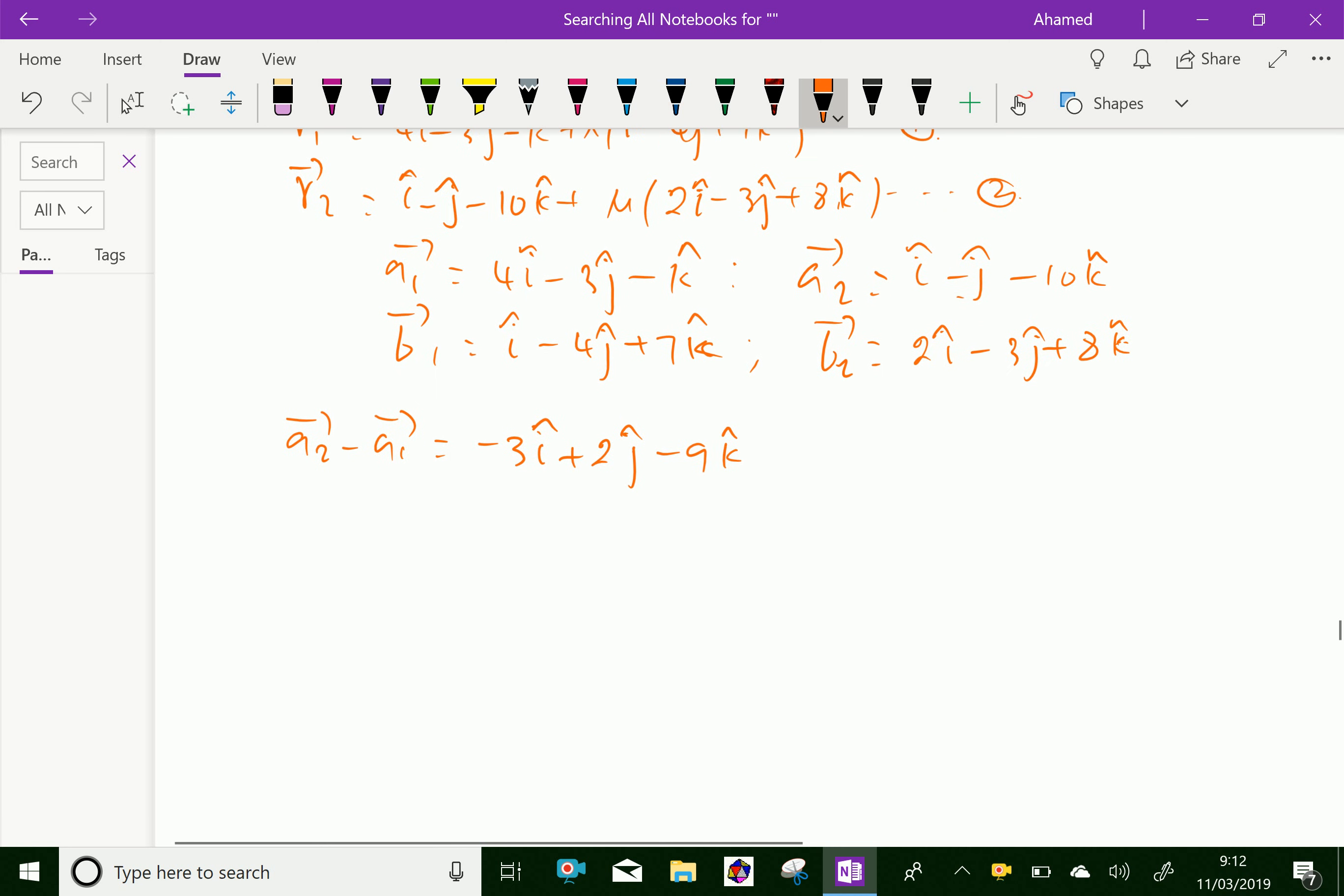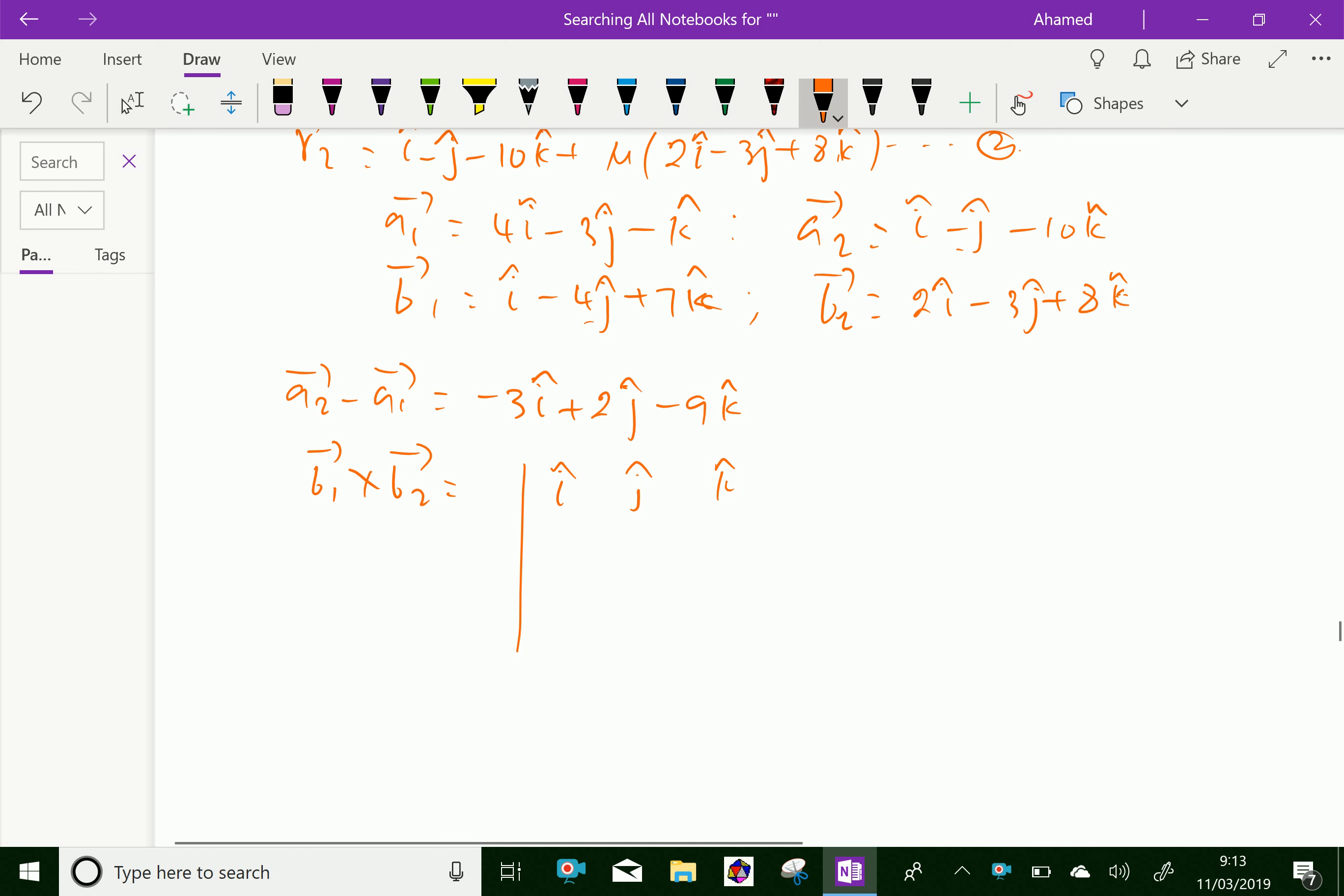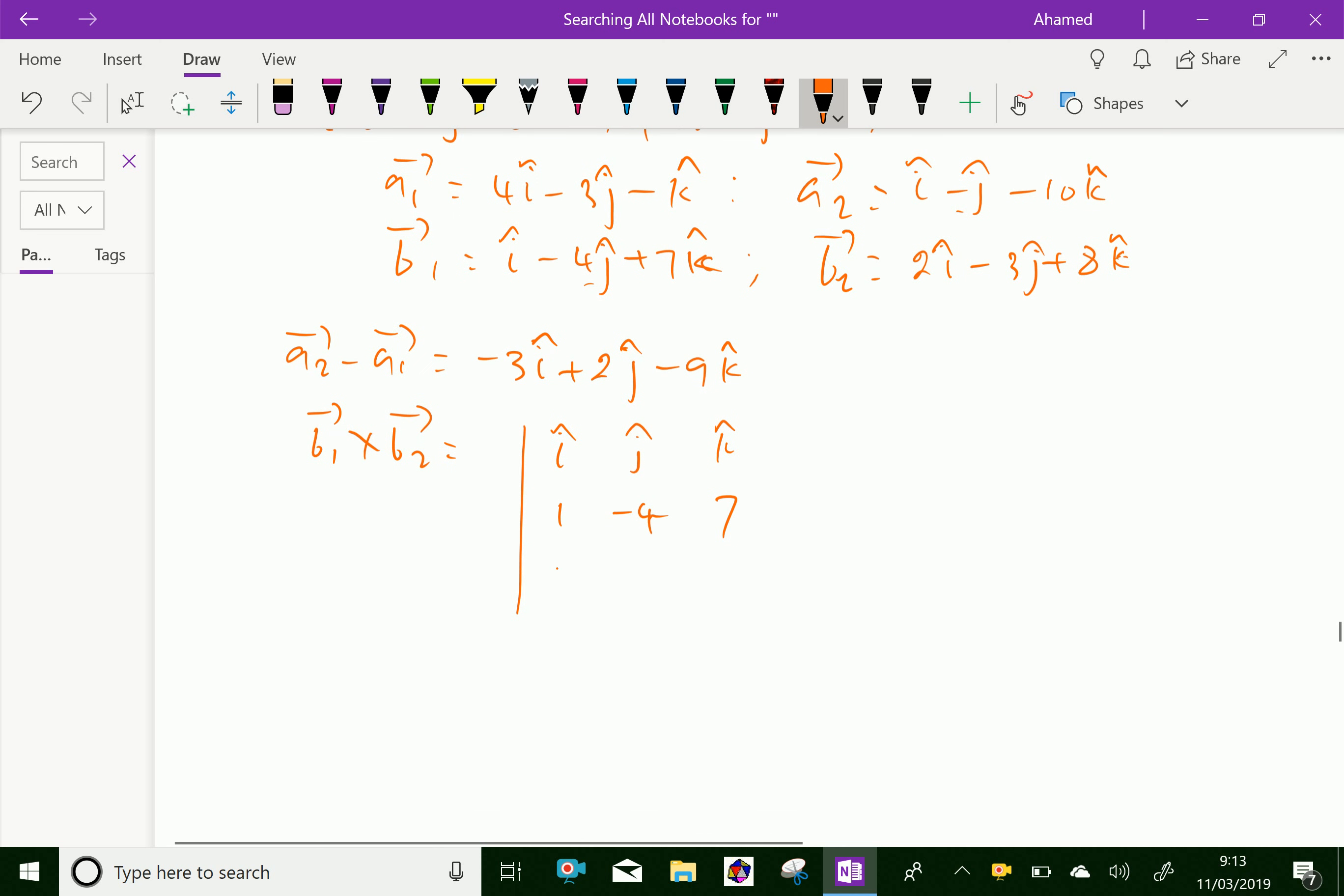Also vector b1 cross vector b2. Set up the determinant with i j k, b1 has 1 minus 4 plus 7, b2 has coefficients 2 minus 3, 8.